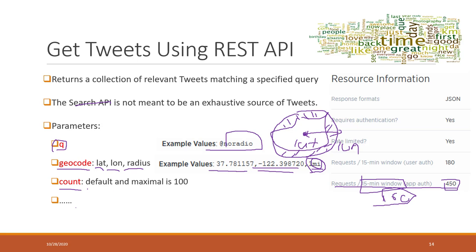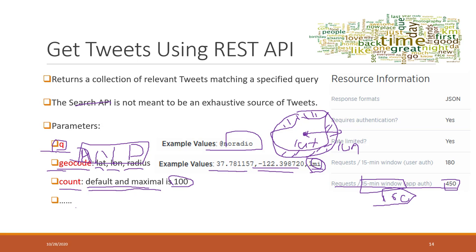You can also define the count parameter — that's the number of tweets returned in each single request. The default value, which is also the maximum, is 100 for the standard REST API. Another tricky part: the relationship between query and geocode is AND. So if you define collecting tweets about election and also in Harrisonburg, it will return tweets that are in Harrisonburg AND talking about election.